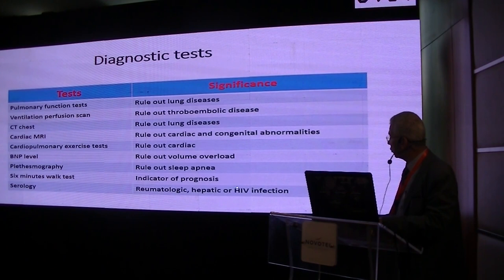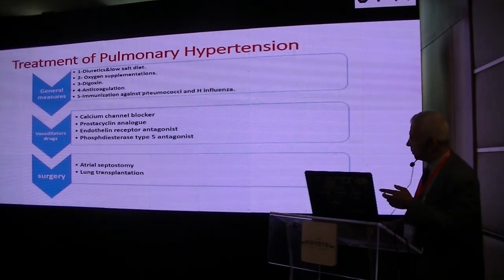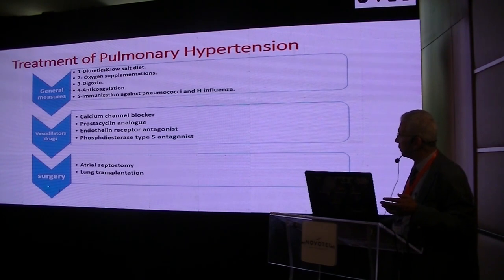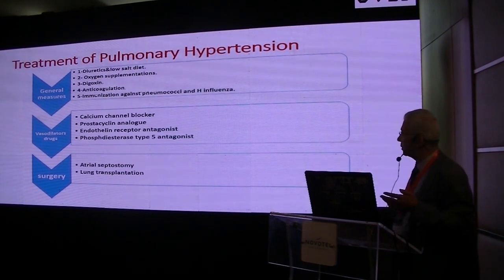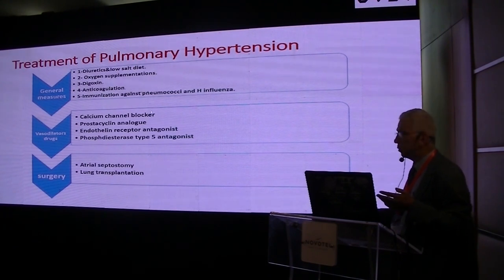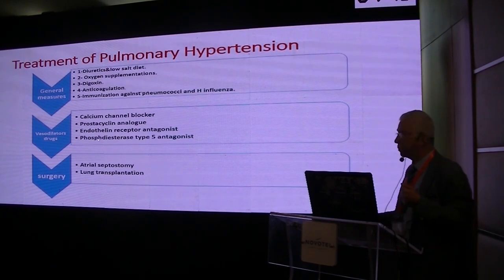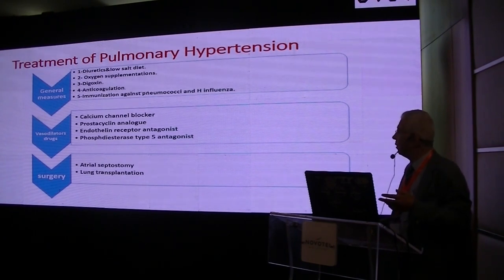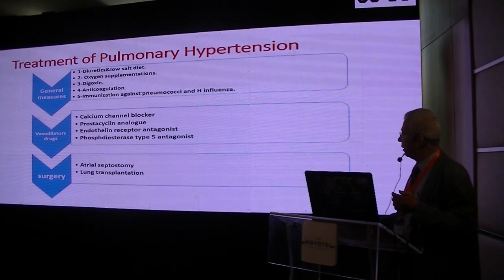Serology including rheumatologic markers and BNP levels may also change. Treatment of pulmonary hypertension in CKD patients follows the same general approach as the general population, with specific considerations. General measures include diuretics, low-salt diet, oxygen supplementation, digoxin, anticoagulation, and immunization against pneumococcal vaccine. Vasodilator drugs include calcium channel blockers, prostaglandins or prostacyclin analogues, endothelin receptor antagonists, and phosphodiesterase-5 inhibitors such as sildenafil. Surgical options include atrial septostomy and lung transplantation.